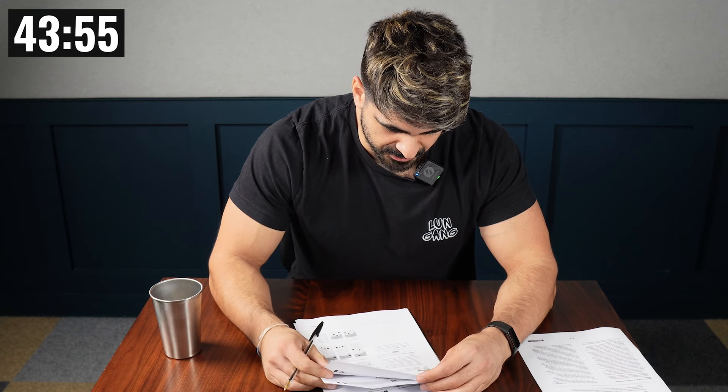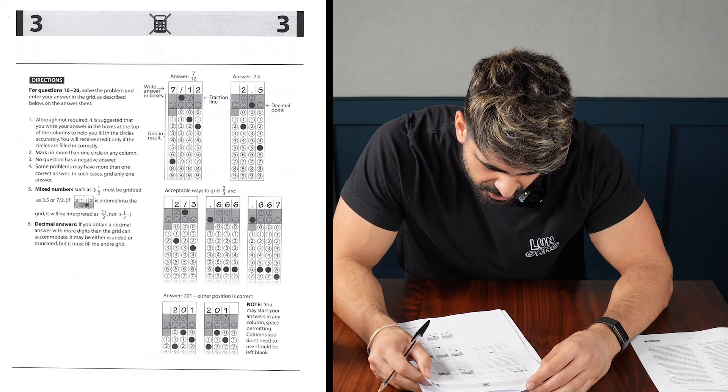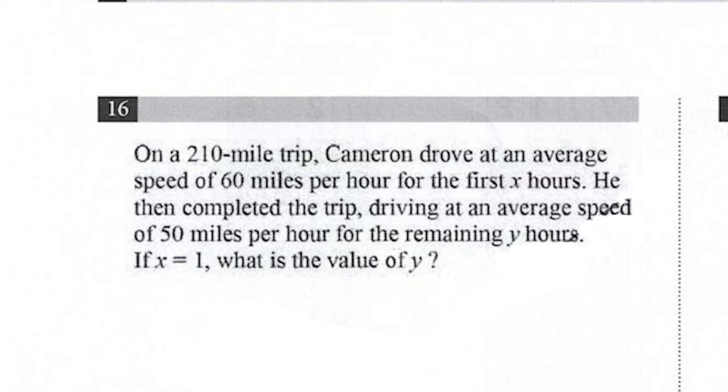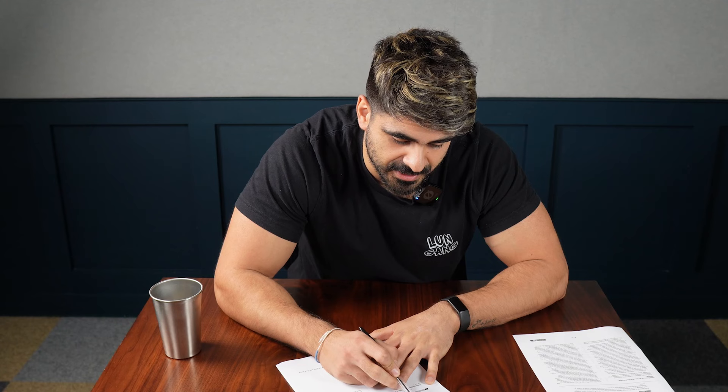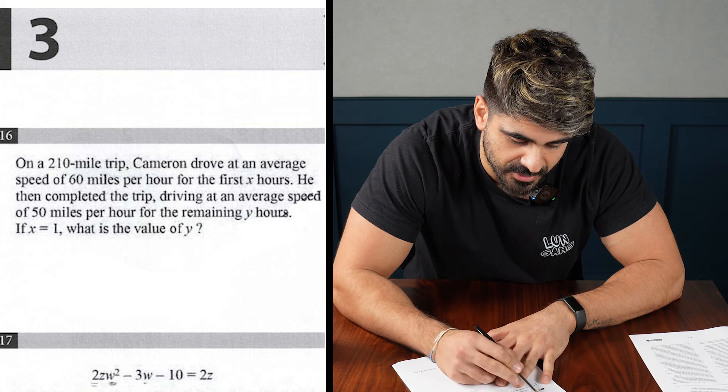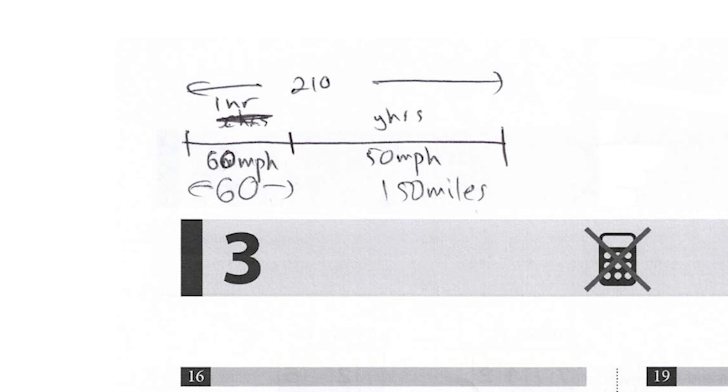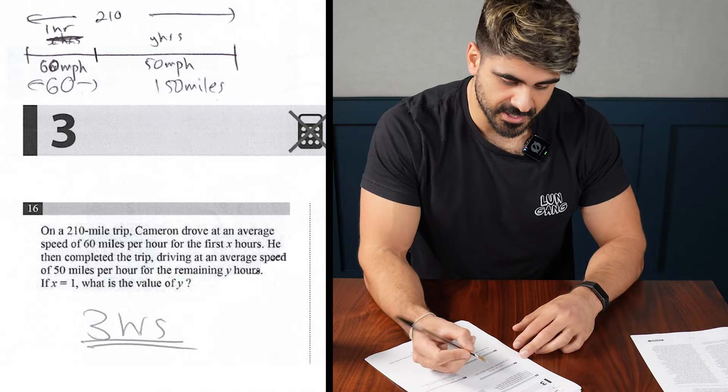For question 16, solve the problem and enter your answer in the grid. Although not required, it's suggested that you write your answer in the box at the top of the columns. On a 210 mile trip, Cameron drove an average speed of 60 miles per hour for the first X hours. He then completed the trip driving at an average speed of 50 miles per hour for the remaining Y hours. If X is one, what's the value of Y? So for one hour, you're traveling at 60 miles per hour. In that first hour, you've traveled 60 miles, which means for the second portion, you're doing 150 miles. That's three hours. Yeah, three hours.